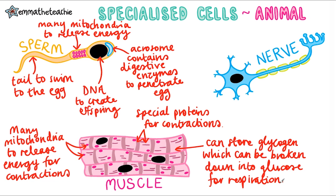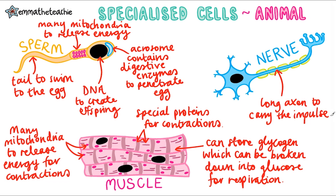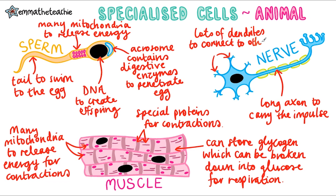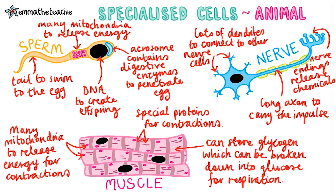Finally, up here, we've got a nerve cell. Its function is to carry electrical impulses around the body. What can you spot that would help it do this? Well, this is called an axon and it's very long to allow the impulse to be carried along it. And over here, you can see we've got lots of these little spiky things, which are called dendrites. Dendrites allow the nerve cell to connect to lots of other nerve cells. And finally, we've got nerve endings. These release chemical messengers that will cause an electrical impulse to be carried in the next nerve cell. So the nerve endings have lots of mitochondria to release the energy needed to make these chemical messengers.